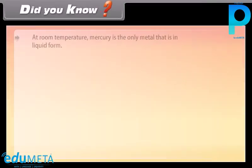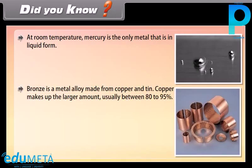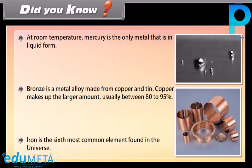Did you know? At room temperature, mercury is the only metal that is in liquid form. Bronze is a metal alloy made from copper and tin, with copper making up the larger amount — usually between 80 to 95%. Iron is the sixth most common element found in the universe.